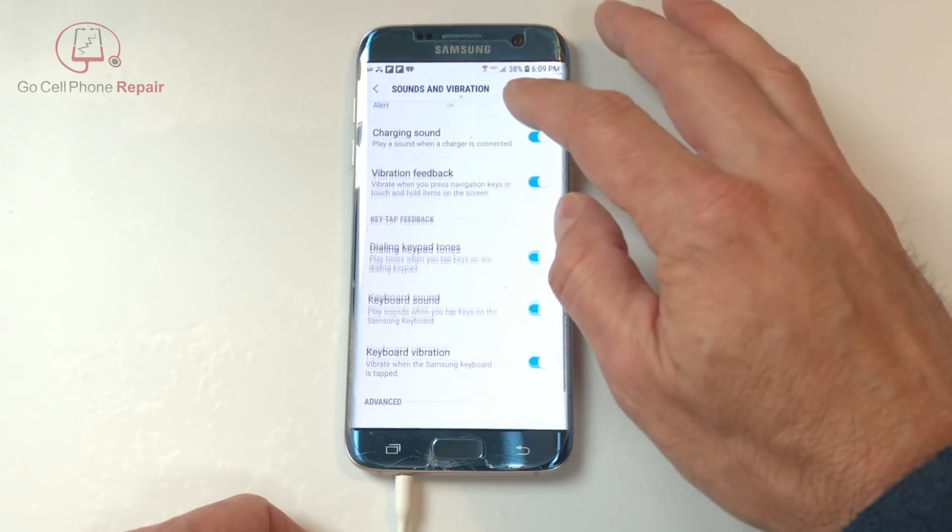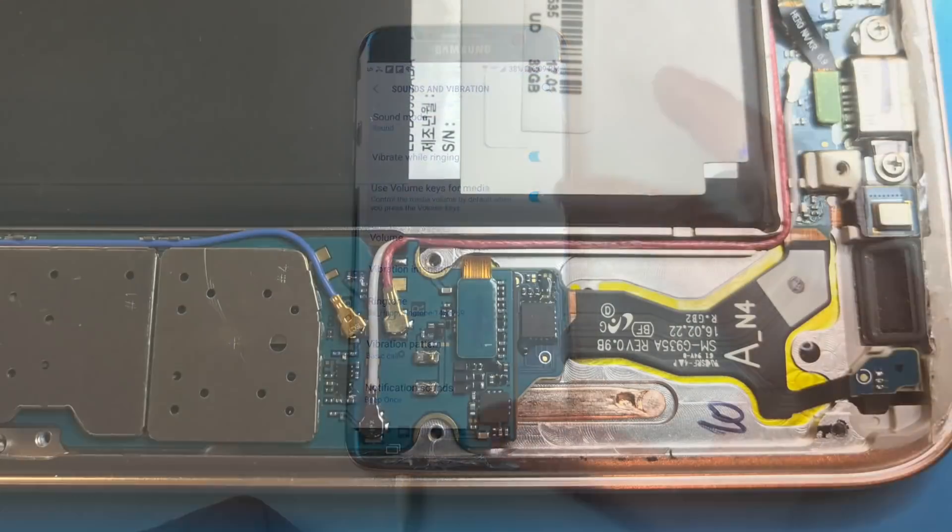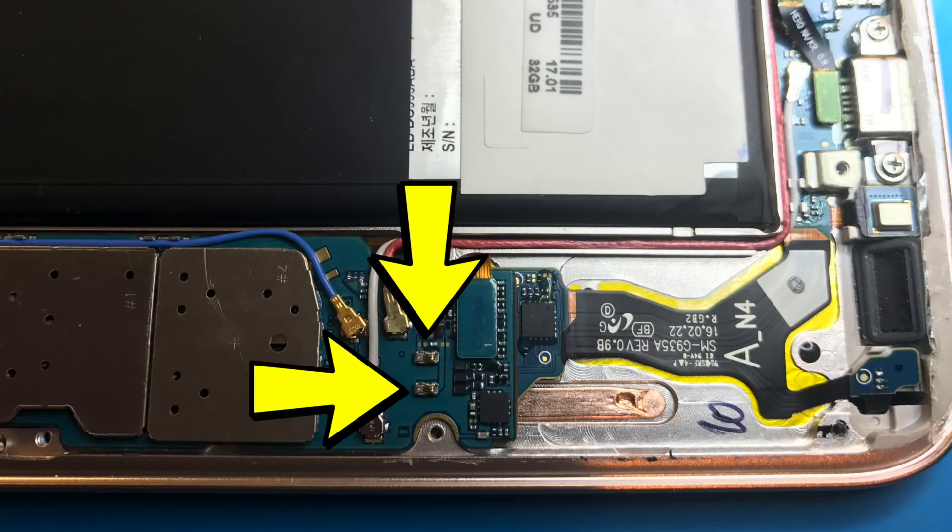When you have a lack of sound from everywhere, that is a completely different story. So what we're going to do is take a look at where the speaker connects on the inside of the phone. At these two points are where the connection takes place between the speaker and the motherboard. So the first thing I like to do in this situation is to rule out the speaker as a problem.